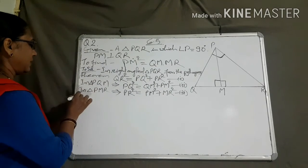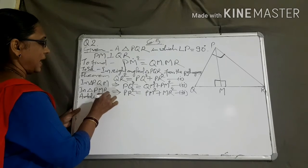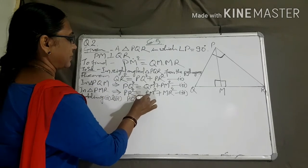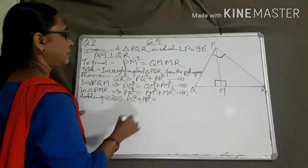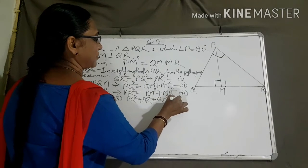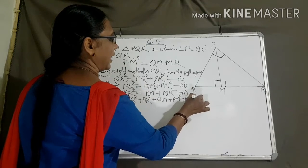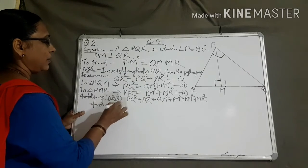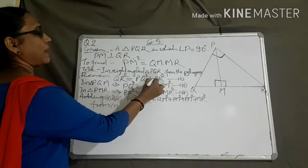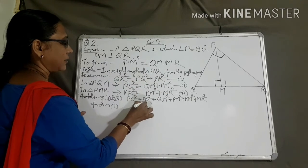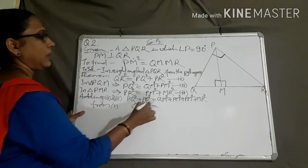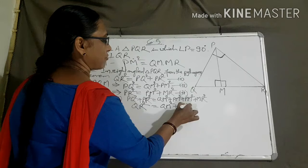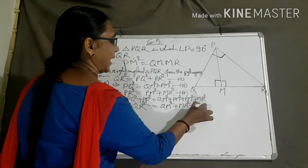Adding equations two and three, we get: PQ square plus PR square equal to QM square plus PM square plus PM square plus MR square. From equation one, PQ square plus PR square equals QR square. So QR square equals QM square plus MR square plus twice PM square.